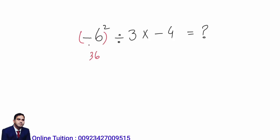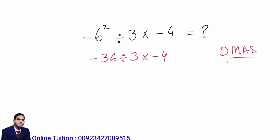First of all, note that there is no parenthesis around the negative 6. This is not negative 6 in parenthesis — so it is not positive 36. This is negative 36. So we have negative 36 divided by 3, multiplied by negative 4. We have to follow the DMAS rule. In this question, we have division and multiplication, and negative 4 and negative 36 are numbers, not operations.